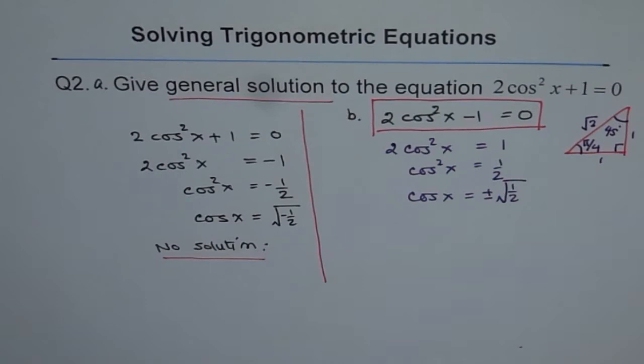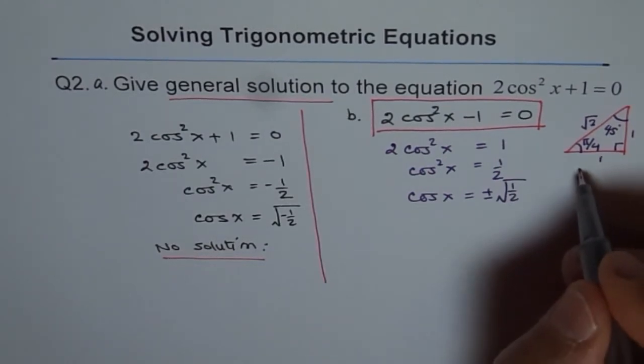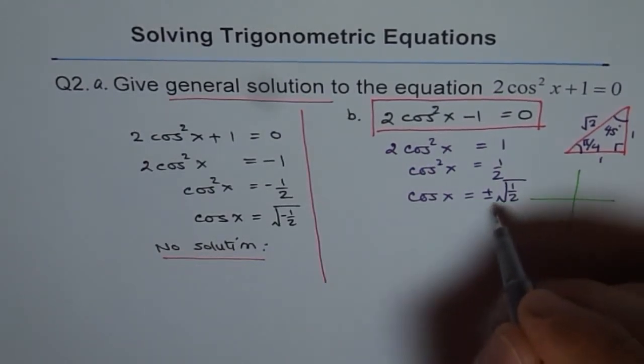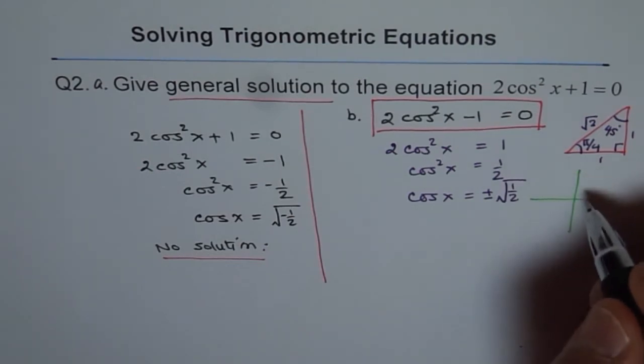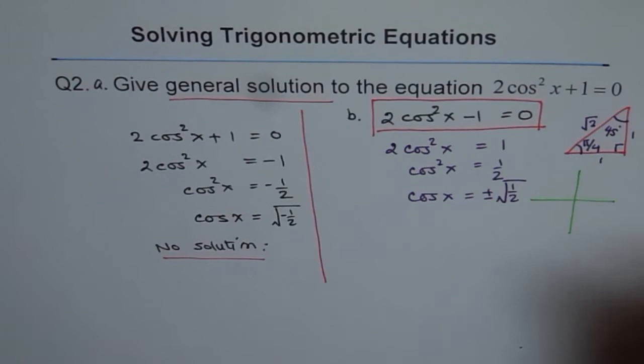So, we have a solution here for cos x, which should be 45 degrees or pi by 4. Now, plus and minus means in all four quadrants. So, our solutions are, let me draw here, this is our solution.